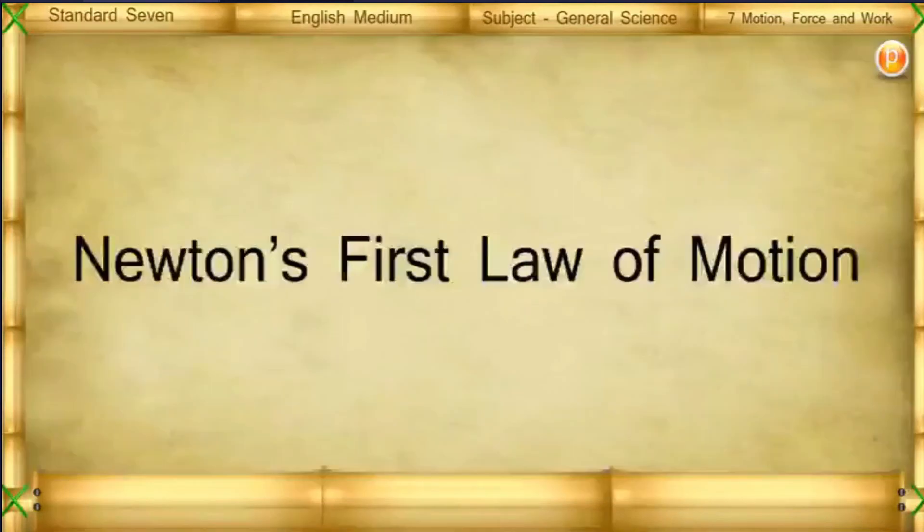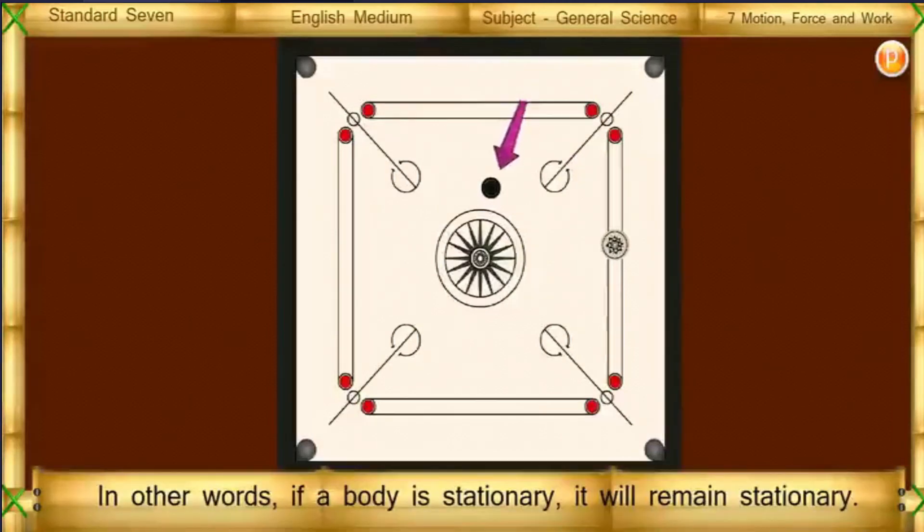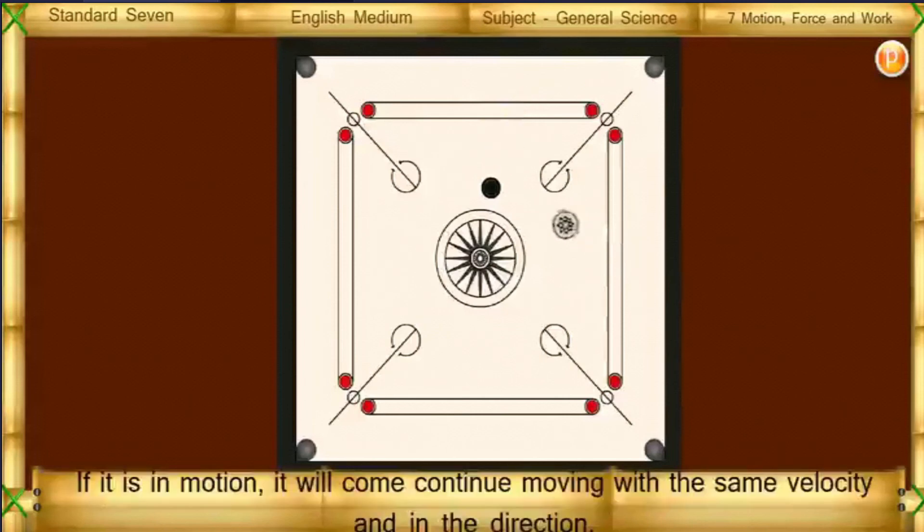Newton's First Law of Motion: If no force is acting on a body, its velocity does not change. That is, the body does not accelerate. In other words, if a body is stationary, it will remain stationary. If it is in motion, it will continue moving with same velocity and in the same direction.